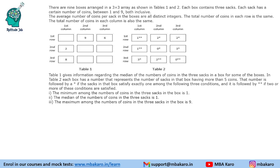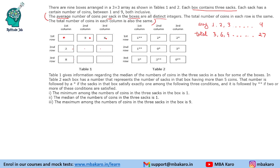This set was considered very difficult by aspirants, but these key points will help you fill the cells more easily. The average number of coins per sac in the boxes are all distinct integers. There are 9 boxes with different averages, so the averages are going to be 1, 2, 3 and so on till 9. Since each box contains 3 sacs, the totals are going to be 3, 6, 9 and so on till 27. So we basically need to fill totals of 3, 6, 9 up to 27.